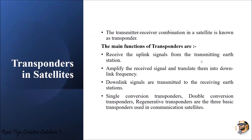The transmitter-receiver combination in a satellite is known as a transponder. It takes signals from the earth station, performs the required operations, and retransmits the signal again to the earth station. A circuitry that consists of both transmitter as well as receiver combination in a satellite can be considered a transponder.